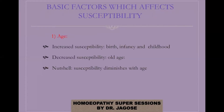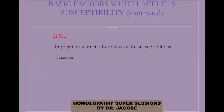Now let's go to the second point — the basic factors which affect susceptibility. Number one is age. Susceptibility increases from birth through infancy and childhood, and in old age it decreases. In a nutshell, susceptibility diminishes with age — it is maximum in the neonate and very low in old age.